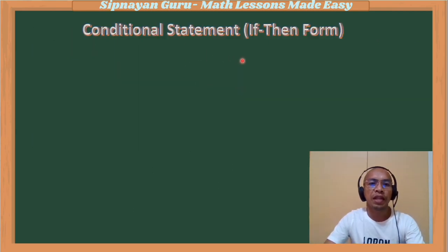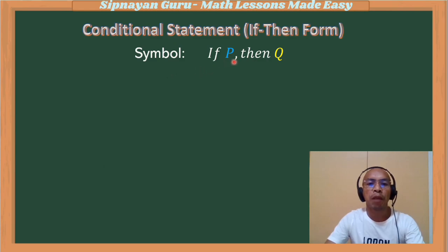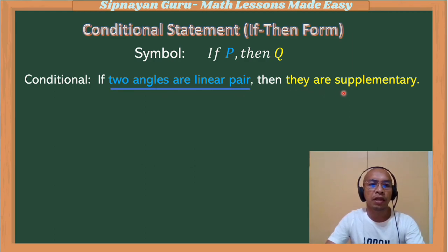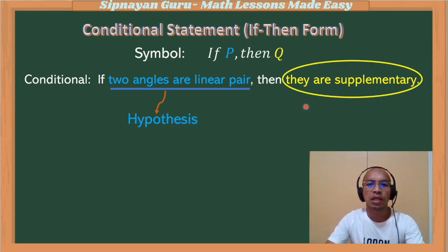If we recall the conditional statement, it is represented by the symbol: if hypothesis then conclusion, or if P then Q. So suppose we have the conditional statement: if two angles are a linear pair, then they are supplementary. So this is the hypothesis, and then they are supplementary is the conclusion.